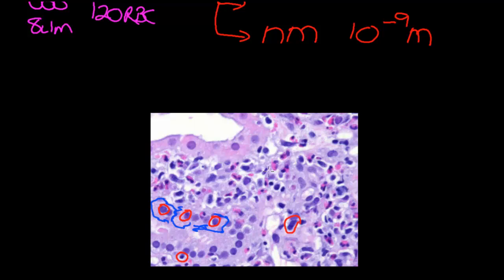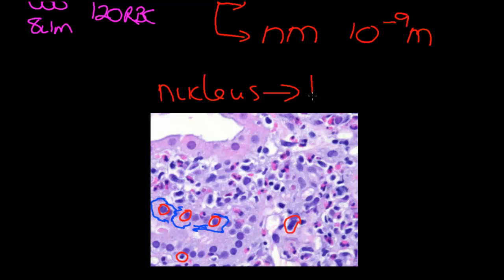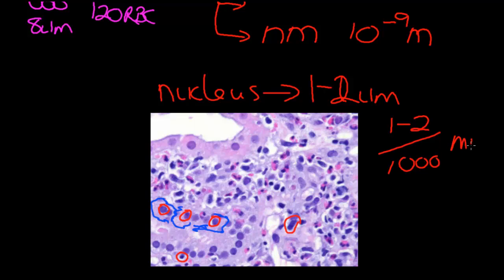The first thing you do when you look at a histological specimen is not to try and identify it, but to work out what scale you're looking at. You can tell because a nucleus in most common cells — though it does vary — is about one to two micrometres in diameter, which means one to two one-thousandths of a millimetre. You can use that like a little ruler and measure using those nuclei on scale.